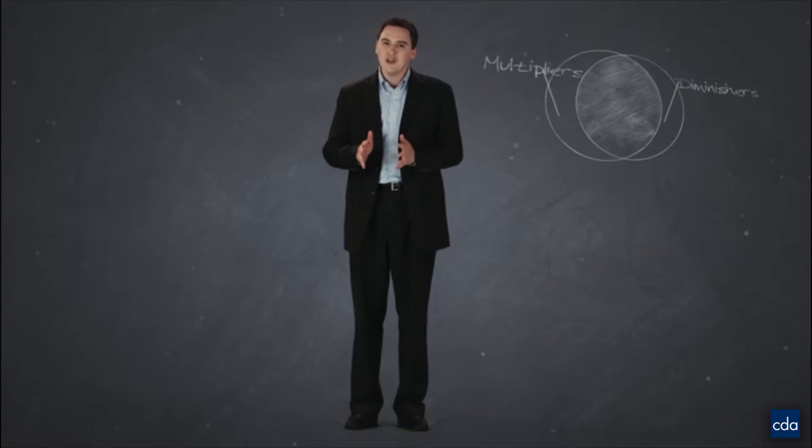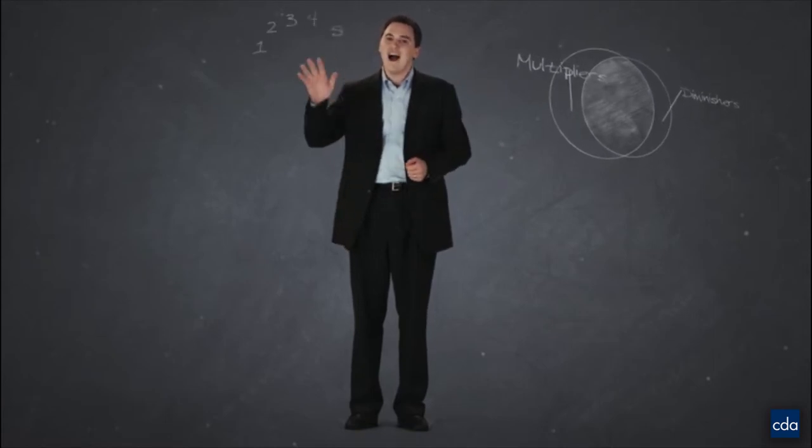So what did we find? We found that diminishers and multipliers did many things alike, but a small number of things differently - five in particular.